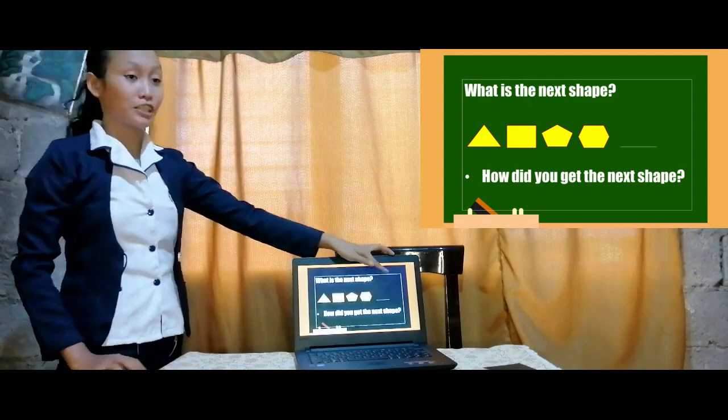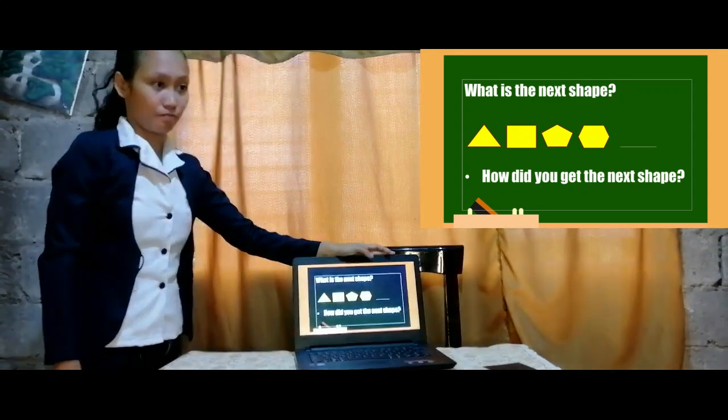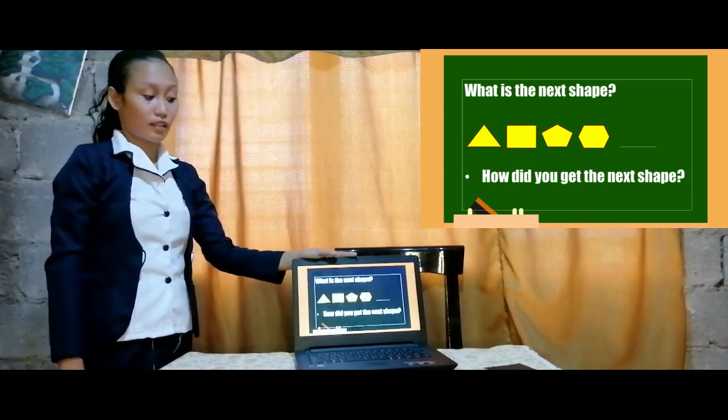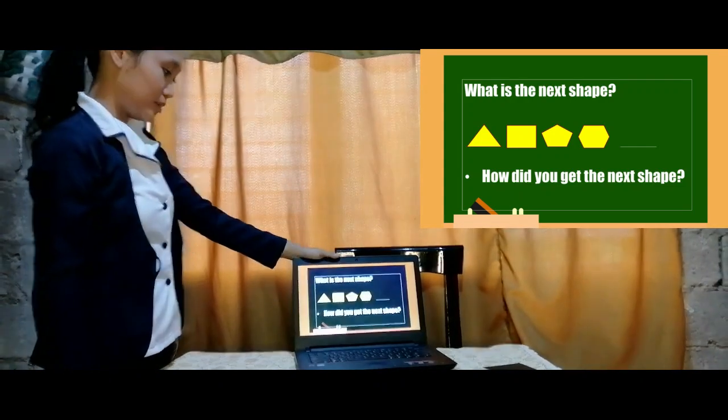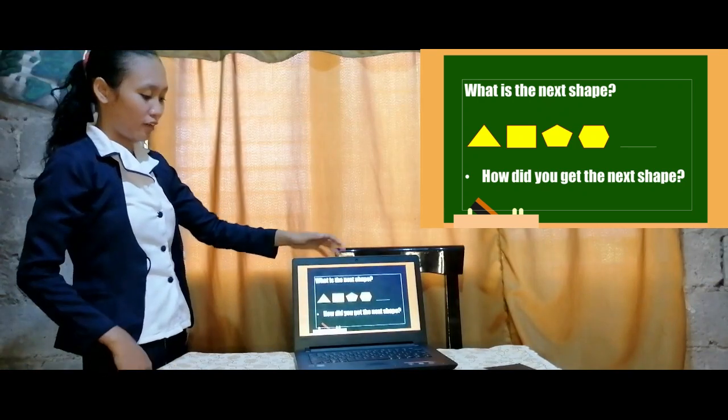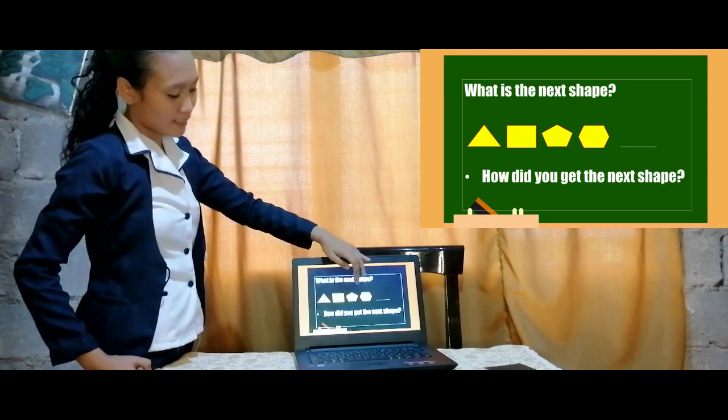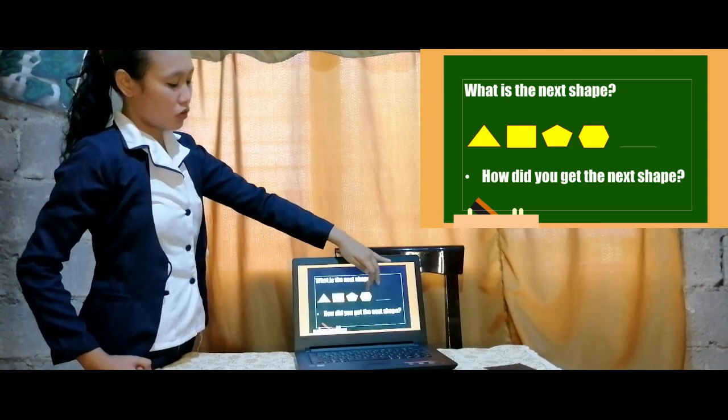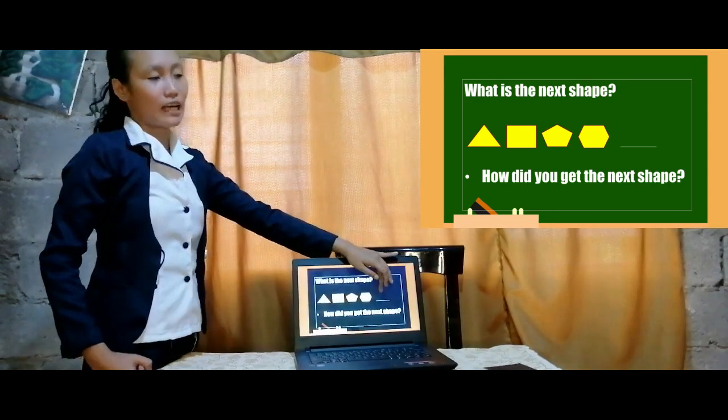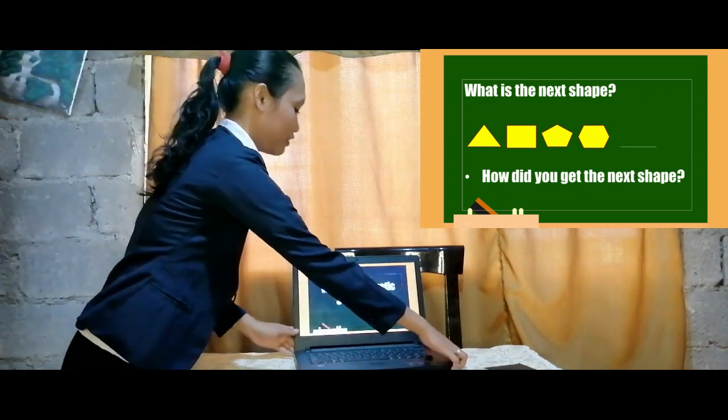Next, what do you think is the next shape? What do you observe? Very good, the next shape is heptagon. How did you get the next shape? Very good. We have here 3 sides, 4 sides, 5 sides, 6 sides. So the next would be 7 sides. So 7 sides is called the heptagon.